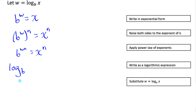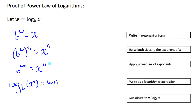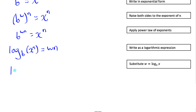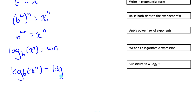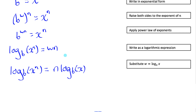Now rewrite this back in logarithmic form: log base b of x to the n equals wn. We can see this is equivalent to the line above. Last step — replace w with what we know it equals: log base b of x. So log base b of x to the n equals log base b of x times n, and moving n to the front gives us n times log base b of x. This proves that log base b of (x^n) equals n times log base b of x — the power law of logarithms.